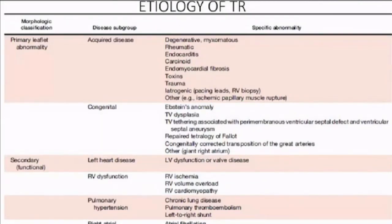Regarding the etiology of tricuspid regurgitation: 70–80% of cases are functional, mainly due to left heart disease — LV dysfunction and mitral valve disease are more common in India — followed by pulmonary hypertension secondary to chronic pulmonary venous embolism, chronic lung diseases, and left-to-right shunts, then RV ischemia, RV volume overload, and RV cardiomyopathy. Primary causes are less common; in India, rheumatic heart disease is most common, followed by endocarditis and pacemaker lead-related injury.